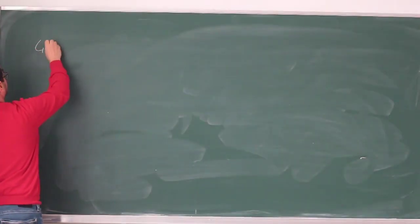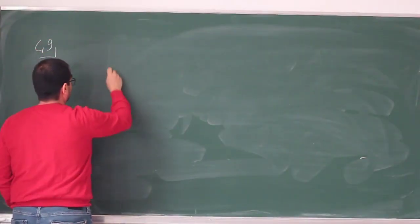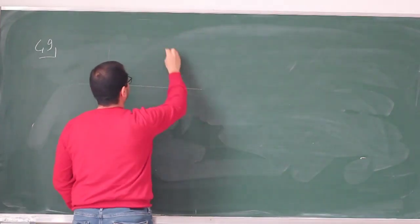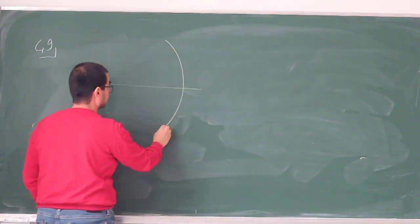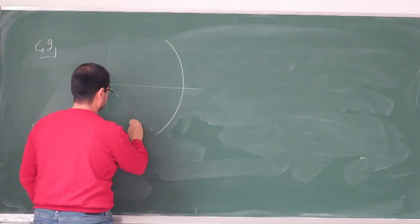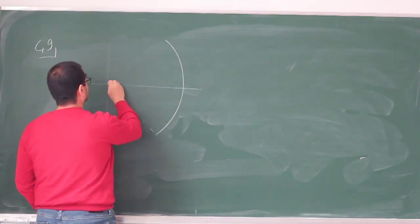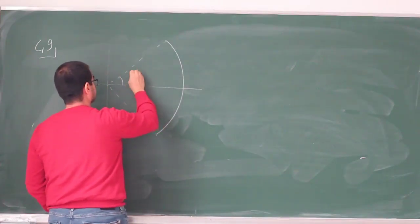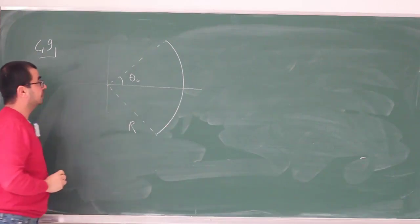Okay, so in this problem, problem 49, we have a continuous charge distribution in the form of a circular arc of radius R, and it extends over some angle 2θ₀.